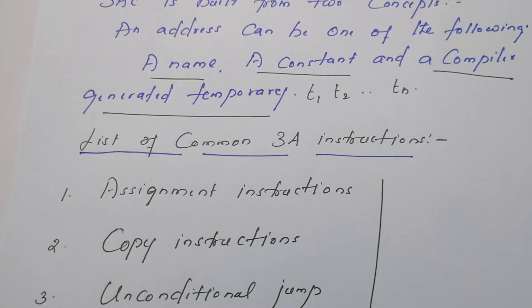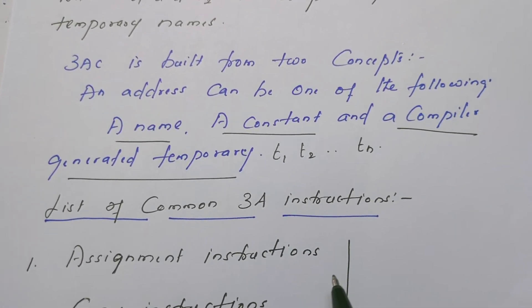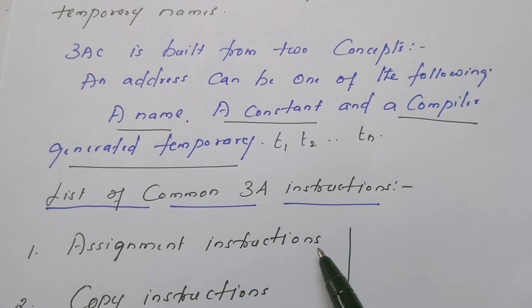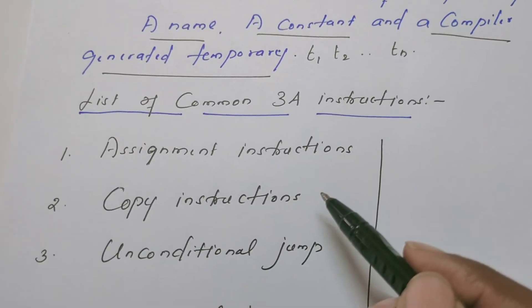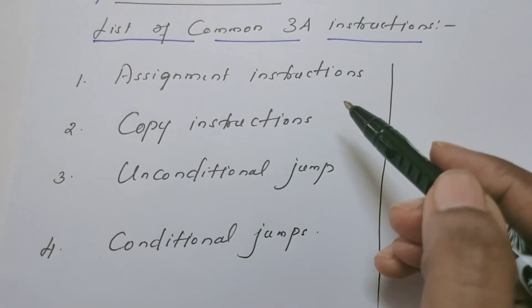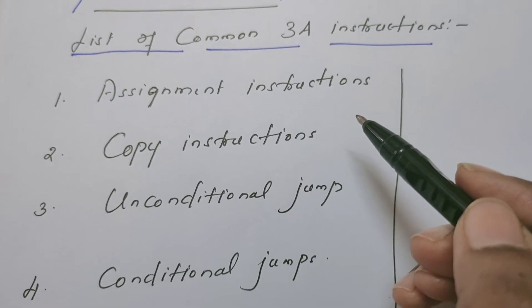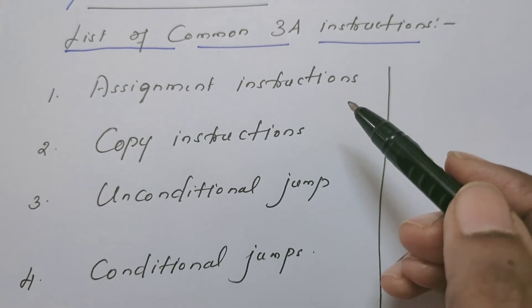Now in general, I am going to introduce some common 3 address instructions. In most programming languages, we have assignment instruction, copy instruction, unconditional jump, conditional jump, etc. So for every type of programming language statement, how to write the equivalent 3 address code? That is what we are going to see.